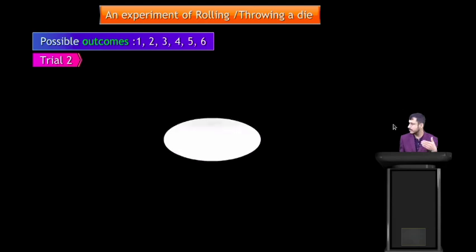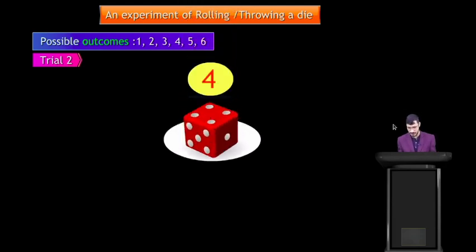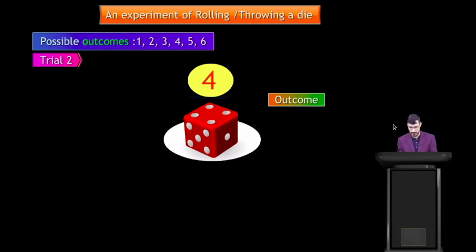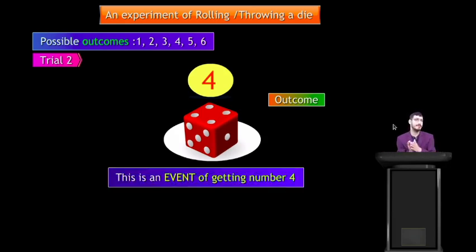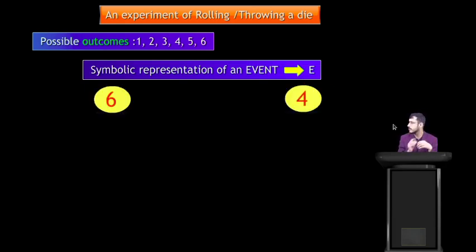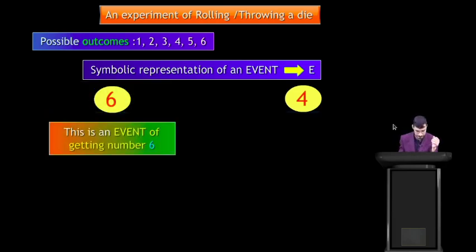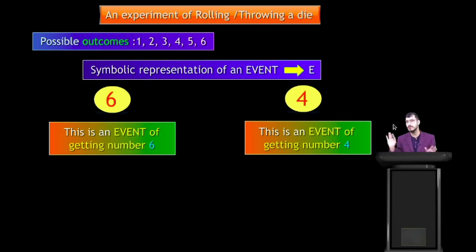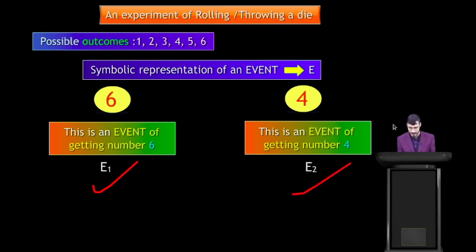In the second trial — the second experiment — the outcome is 4. This is an event of getting number 4. The symbolic representation of an event is E. So this is event E1 (getting number 6) and event E2 (getting number 4) — there are 2 events here.